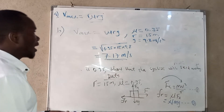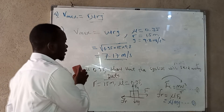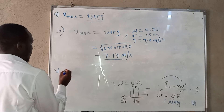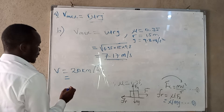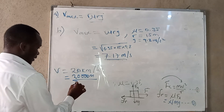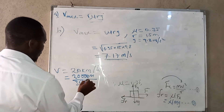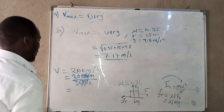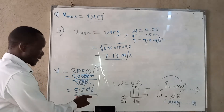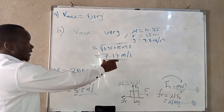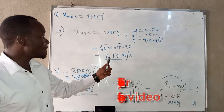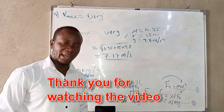So the maximum permissible speed is about 7.17 meters per second. The cyclist is moving at 20 kilometers per hour. Converting: 20 kilometers per hour equals 20,000 meters over 3,600 seconds, which gives approximately 5.5 meters per second. Since the speed at which the cyclist is moving, 5.5 meters per second, is less than the maximum permissible speed of 7.17 meters per second, this cyclist will not skid away.